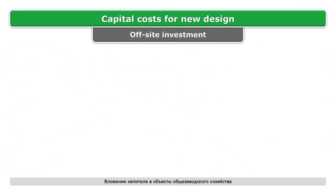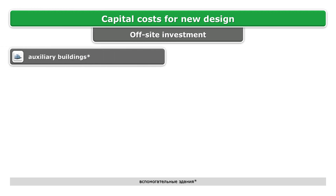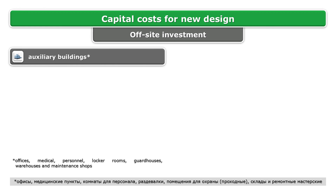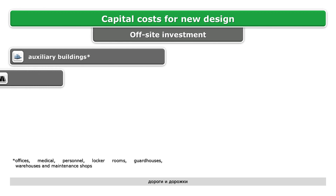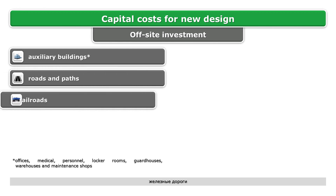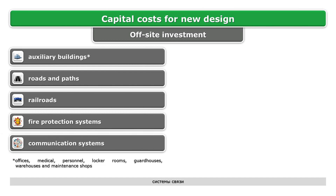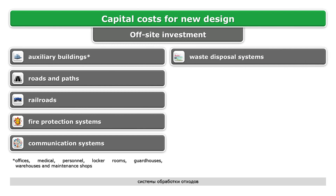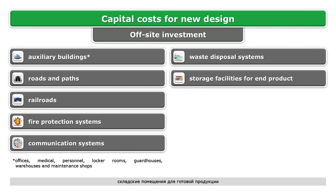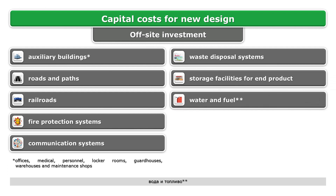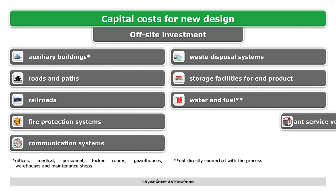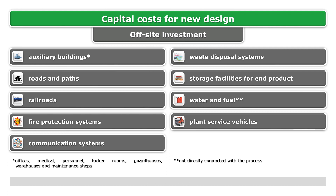Off-site investment includes auxiliary buildings such as offices, medical facilities, personnel areas, locker rooms, guardhouses, warehouses, and maintenance shops. It also includes roads and paths, railroads, fire protection systems, communication systems, waste disposal systems, storage facilities for end product, water and fuel (not directly connected with the process), plant service vehicles, and loading and weighing devices.